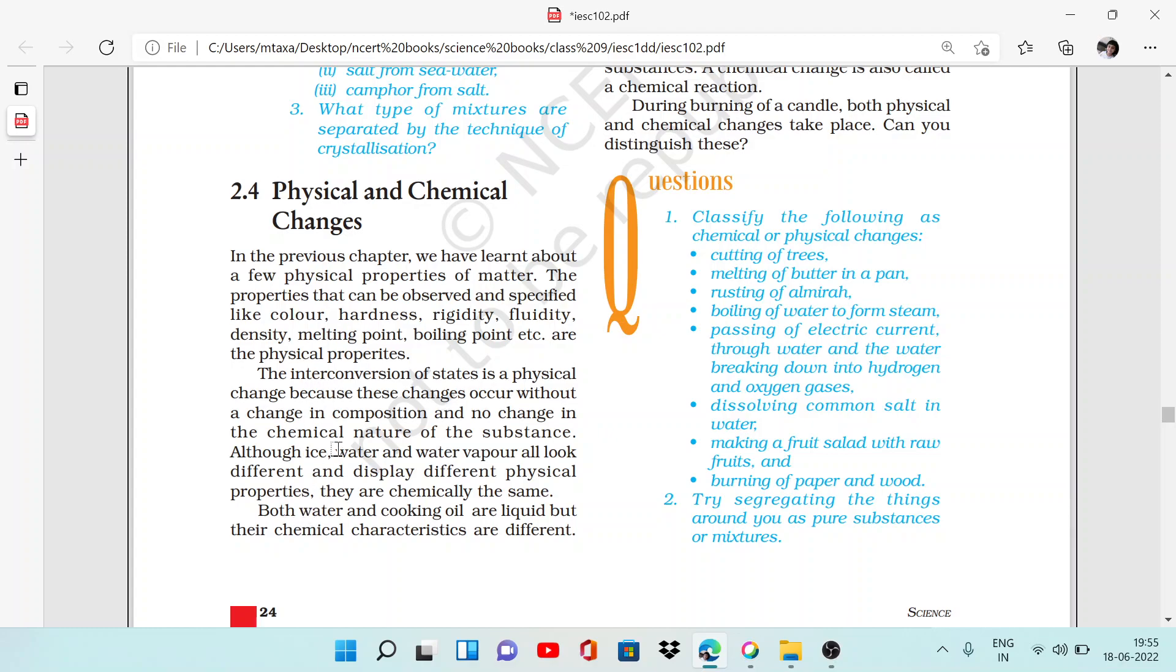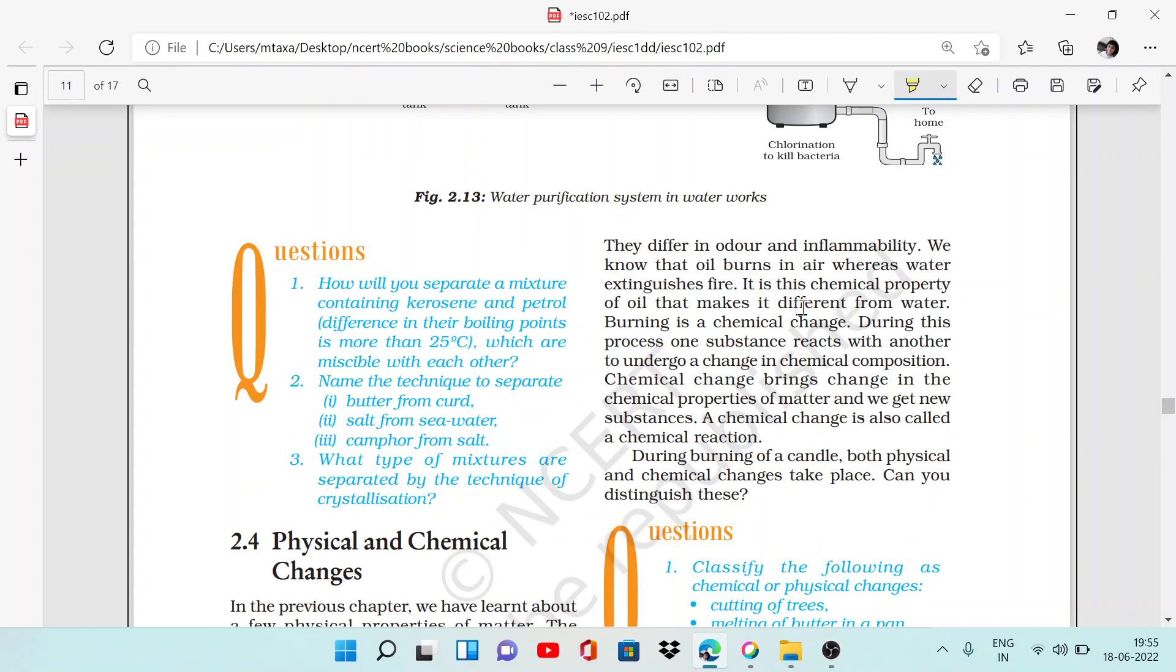If we have water and cooking oil, both are liquid but their chemical characteristics are different. When we talk about water and oil, their odor is different, their flammability is different. We all know that oil burns in air but water is used to extinguish fires. They have different chemical properties. Burning is a chemical change.